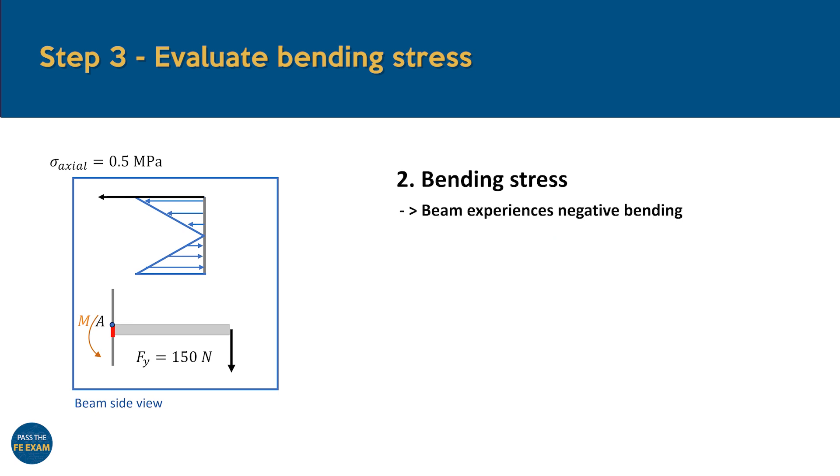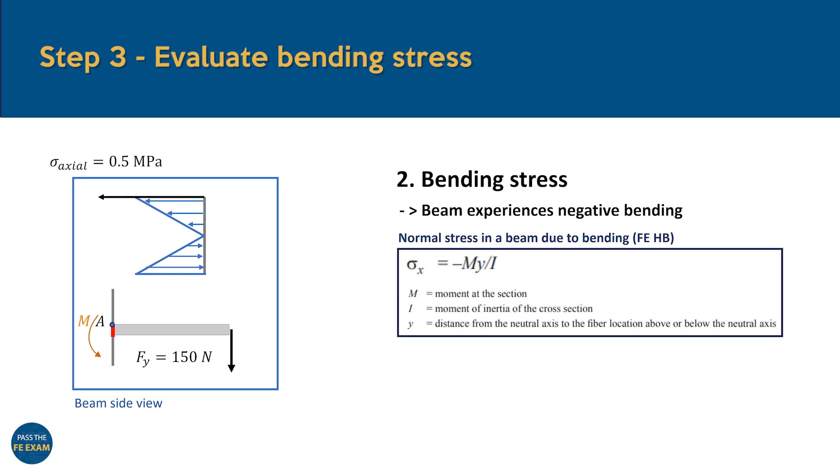Now, we can use the equation from the FE handbook to calculate the bending stress at any vertical point along the beam's cross section. To do this, we'll need three key values: the bending moment M acting on the section, the moment of inertia I of the cross section, and the distance Y from the neutral axis to the point of interest. It's important to note that positive Y refers to a point above the neutral axis, while negative Y corresponds to a point below it. For point A, since it's located at the top of the beam, Y is positive and equals half of the beam's thickness, which gives us 10 millimeters or 0.01 meters. Next, let's calculate the bending moment M. Remember, we've already established that because the beam is experiencing negative bending, the moment will also be negative. But to find the moment's magnitude, we simply multiply the force Fy by the distance from the fixed end, which is 0.3 meters, and this gives us a moment of negative 45 newton meters.